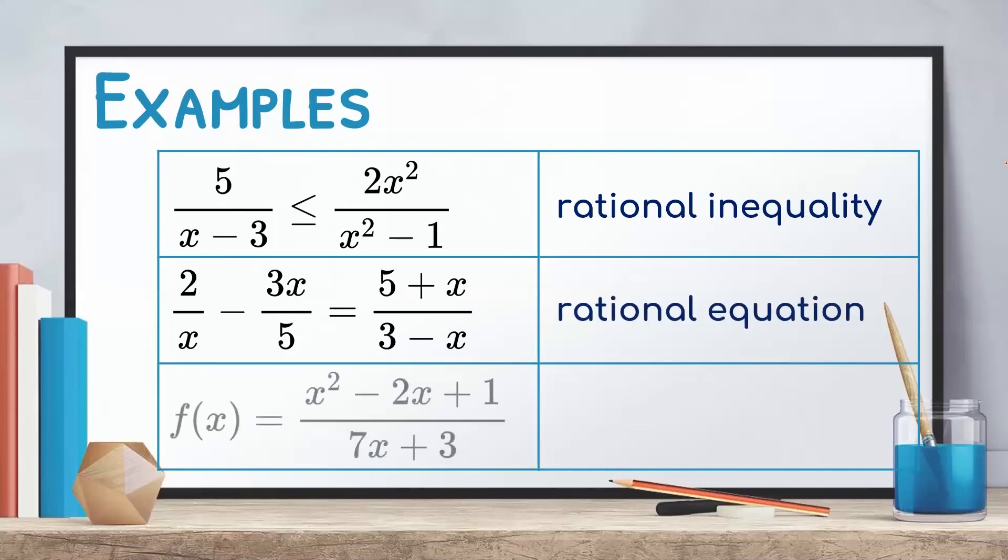And finally, for the sixth one, we have f of x is equal to x squared minus 2x plus 1 over 7x plus 3. Since there is an f of x here, and this is a rational expression, therefore, this entire expression is a rational function.